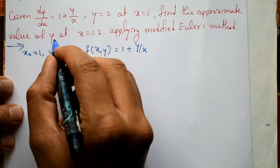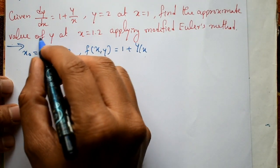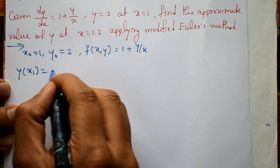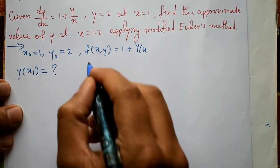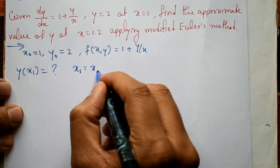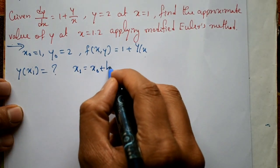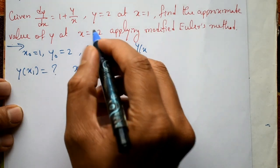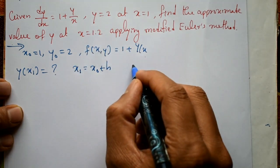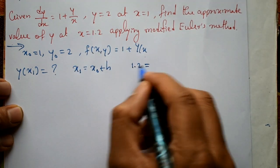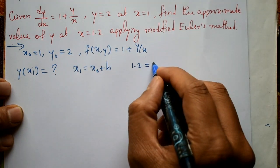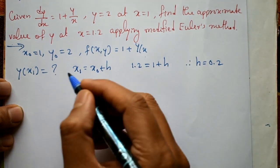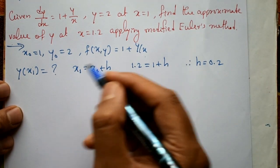We need to calculate the value of y at x equal to 1.2, meaning y of x1 is required. x1 is equal to x0 plus h. Since 1.2 equals x0 which is 1, plus h, the step size h is equal to 0.2.